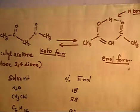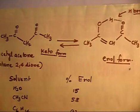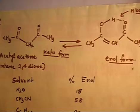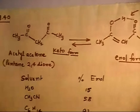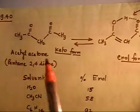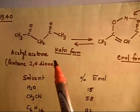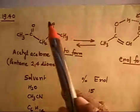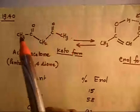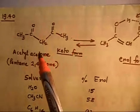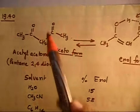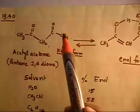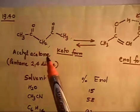Let us discuss this problem. This problem is related to keto-enol tautomerization and the effect of solvent. This molecule is called acetyl acetone. The CH3CO group is the acetyl group. If you have CH3CO-CH3 that is acetone; what we are doing is removing one hydrogen and putting one acetyl group, that's why this is called acetyl acetone — it is an acetyl derivative of acetone.